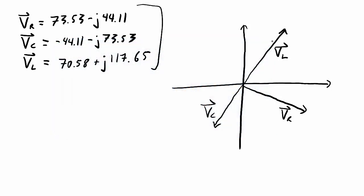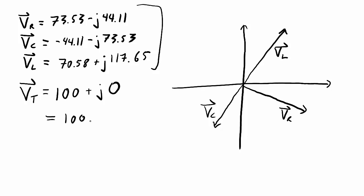Using the rectangular coordinate numbers makes this easier. The total voltage VT: adding the real parts — 73.53 plus negative 44.11 plus 70.58 — adds up to 100. And adding the imaginary parts — minus 44.11 minus 73.53 plus 117.65 — adds up to zero. So the total voltage is 100 plus J0 in rectangular coordinates, or 100 volts at a phase angle of zero degrees in polar coordinates, which equals the source voltage. Right there I have confirmed Kirchhoff's voltage law for this circuit.